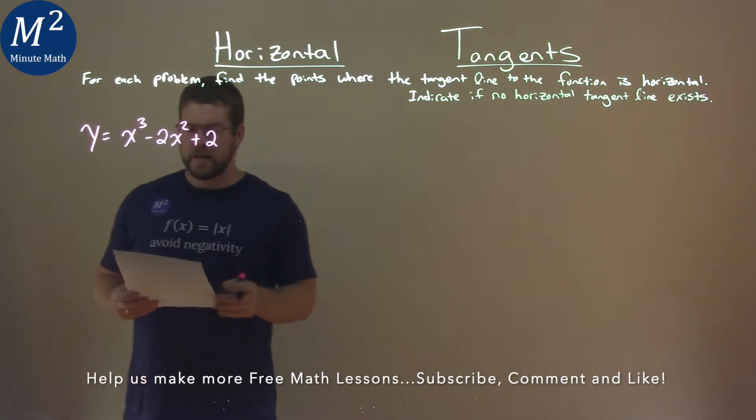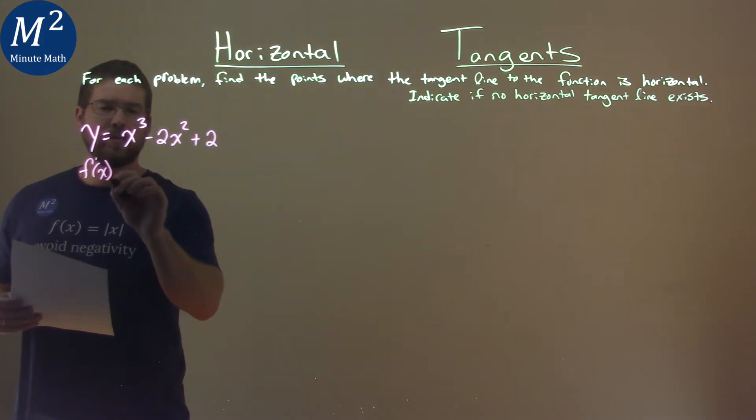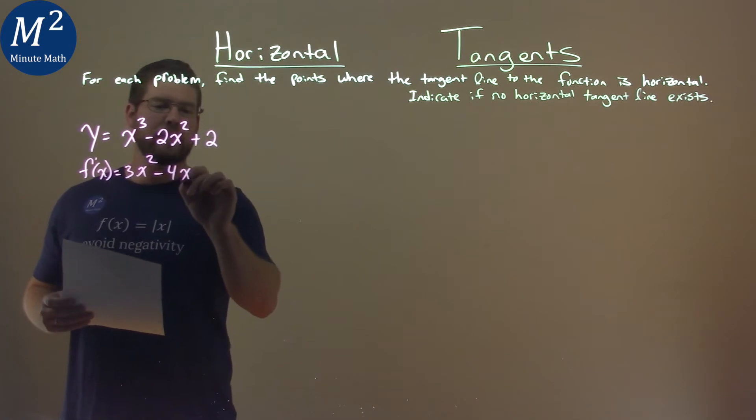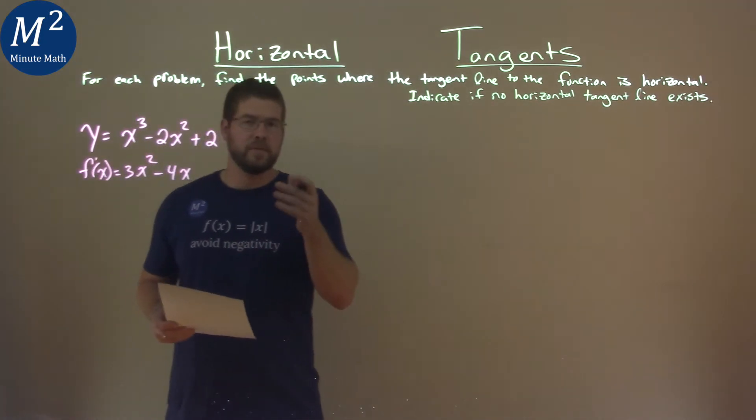Well, the first thing I'm going to do is find my derivative. We're going to find f prime of x, and we're using a power rule, 3x squared minus 2 times 2 is 4, x to the first power. The derivative of 2 is 0.